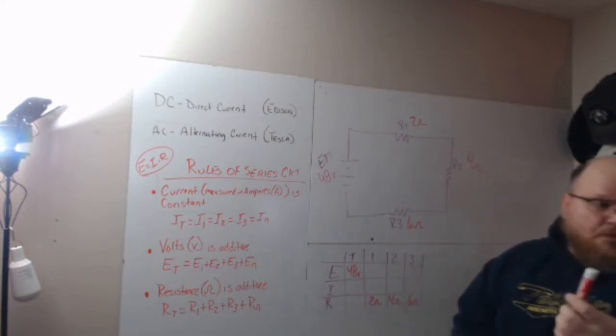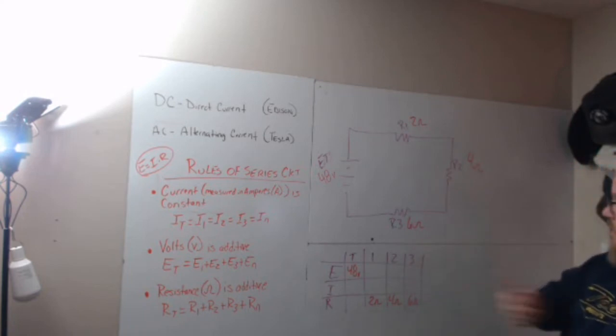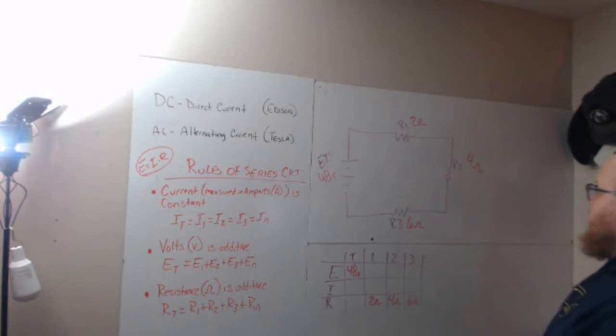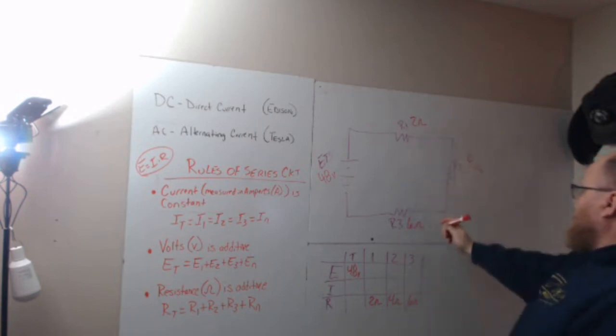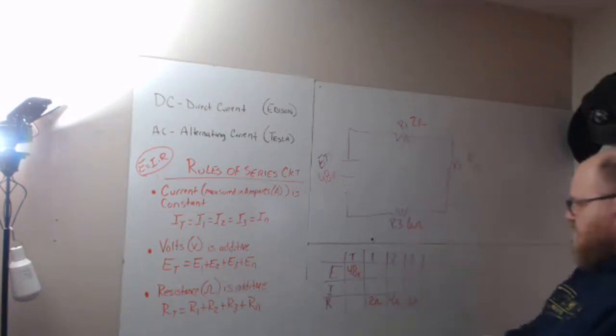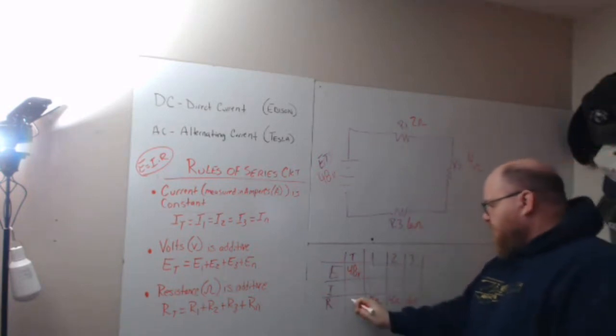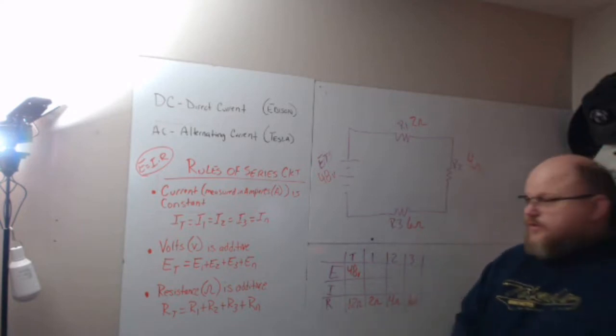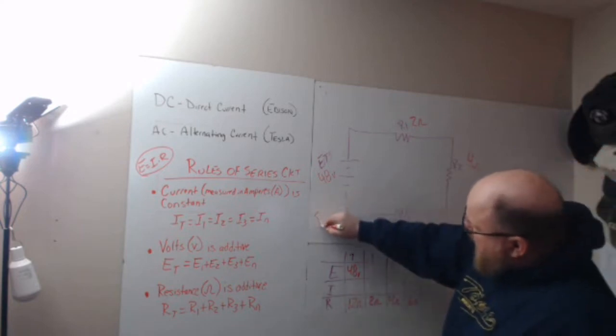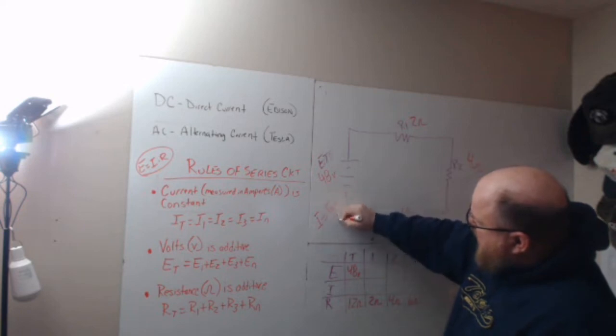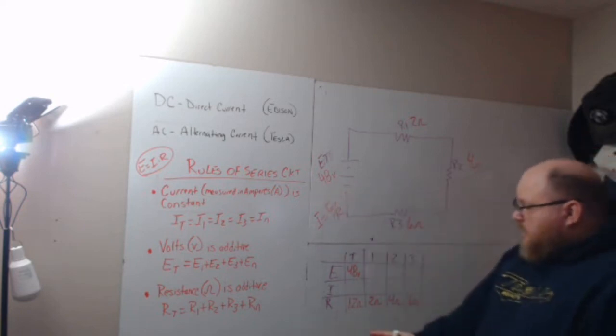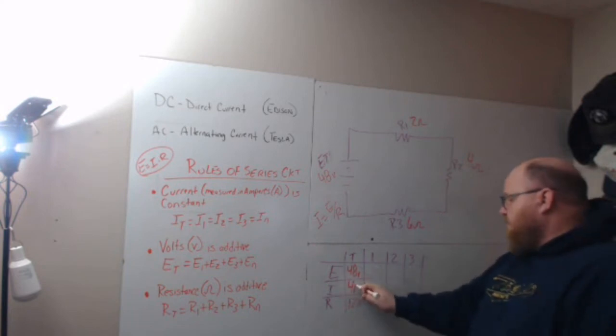So when solving this circuit, the way I will attack it when I'm doing it and I see this, is I'm going to add R1 to R2 to R3. So I'm going to add 2 plus 4, which is 6, plus 6 is 12. So that's going to give me an R total of 12 ohms. Once I have that R total, then I'm going to use Ohm's Law, the variation of I equals E divided by R. E divided by R gives me 4 amps.